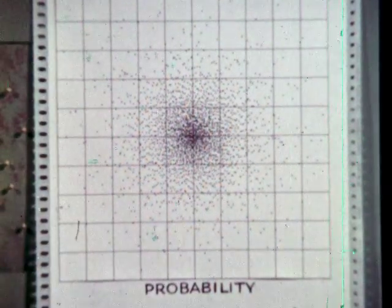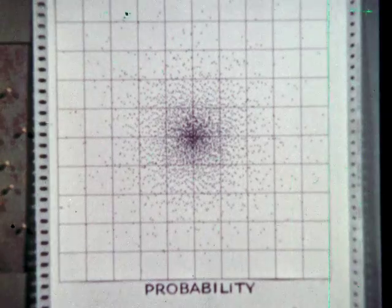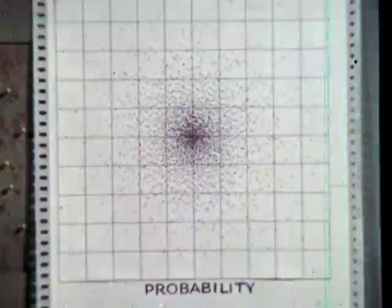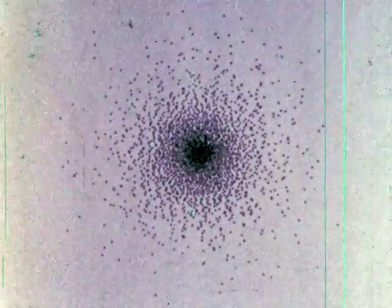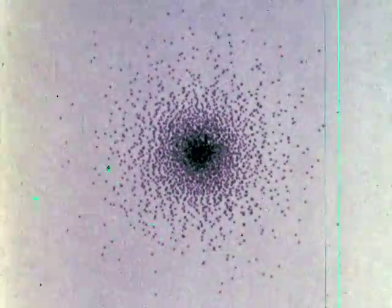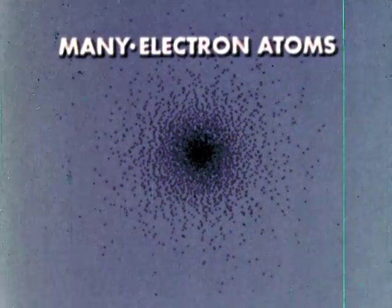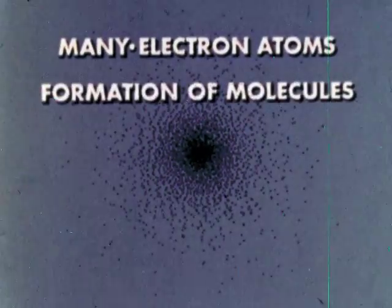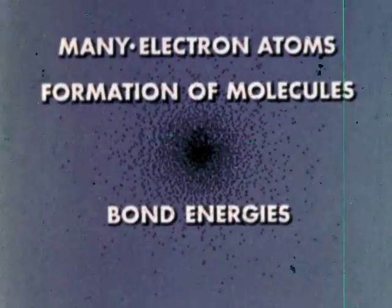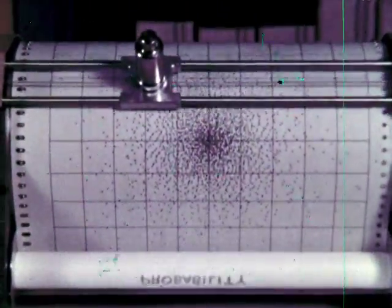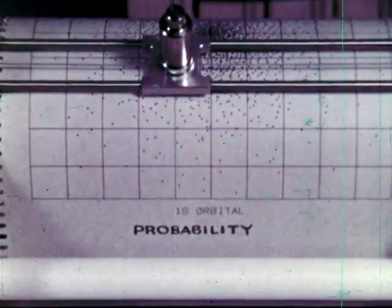This plot, determined by quantum mechanics, describes the structure of the hydrogen atom in terms of probability. Quantum mechanics also explains many other concepts of chemistry, such as the energy levels of many electron atoms, the formation of molecules, bond energies, and bond lengths. These successes prove the usefulness of the quantum mechanical view of the atom.